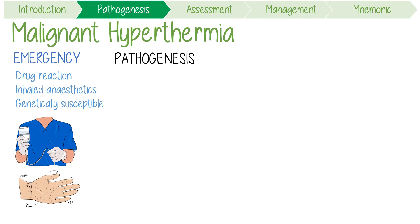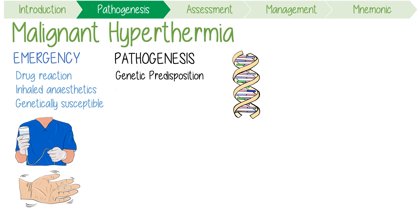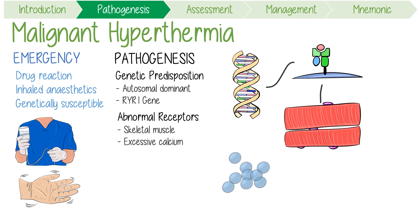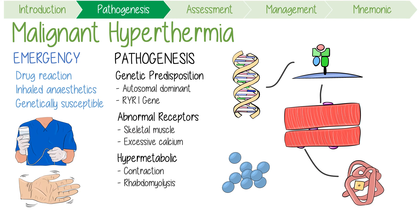The actual pathogenesis of this disease is rooted in a genetic predisposition, usually due to a range of autosomal dominant mutations in the RYR1 gene. This causes abnormalities in the receptors of skeletal muscles, which allow excessive calcium accumulation in the presence of certain anesthetic triggering agents. This leads to a hypermetabolic state with sustained contraction and muscle breakdown, also known as rhabdomyolysis.